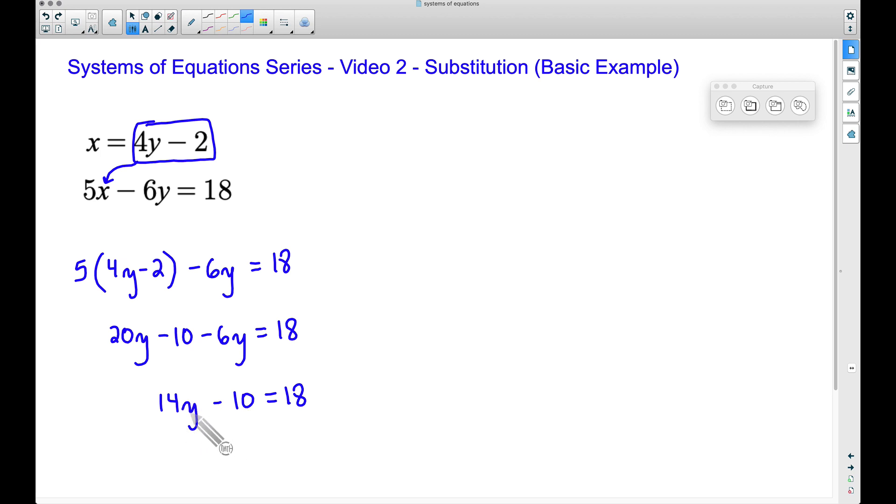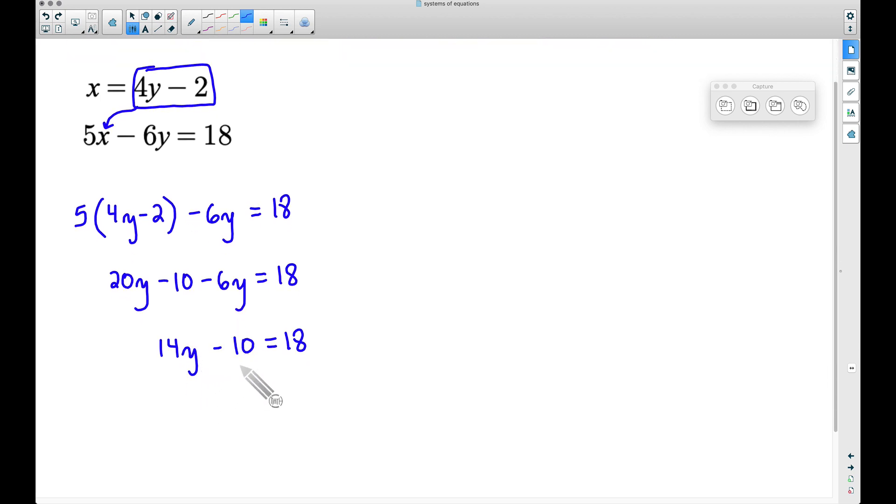So let's get this Y by itself. Let's add this 10 here to both sides. That's going to cancel out the 10 on the left-hand side, and then when we bring down what we have left, we have 14Y is equal to 28.